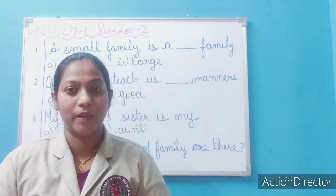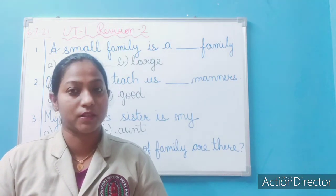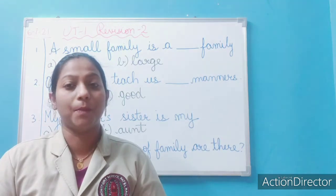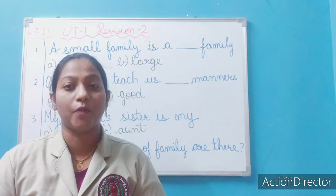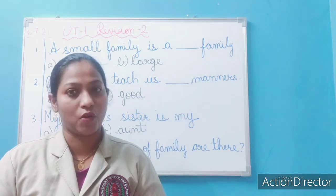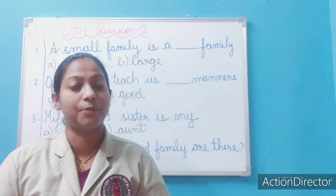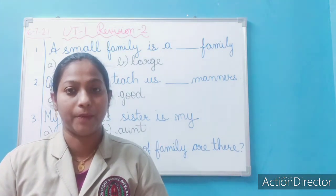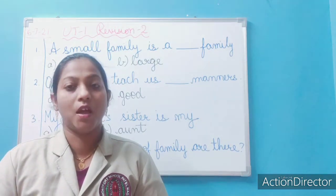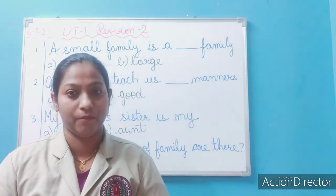In My Family, what all things have we studied? The important question was: what is a family? The people or a group of people that live together in the same house are known as a family. Then we have learned about types of family. We have learned three types of family: small family, big or large family, and joint family.